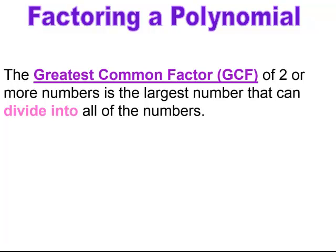The greatest common factor, or the GCF. The GCF of two or more numbers is the largest number that can divide into all the numbers. It's going to be a factor, and it has to be the largest factor that all the numbers have in common.